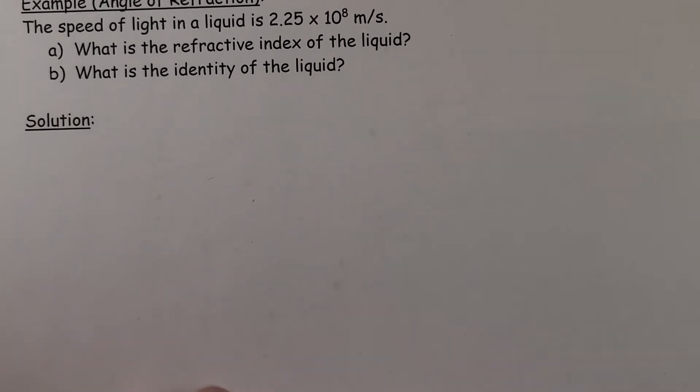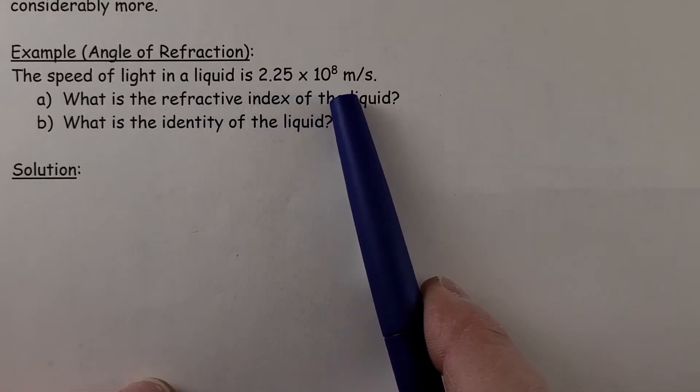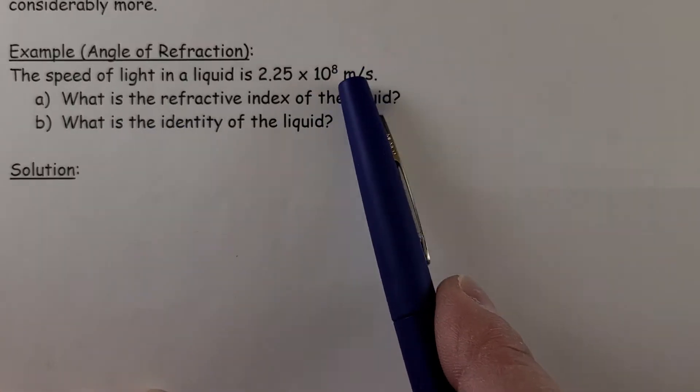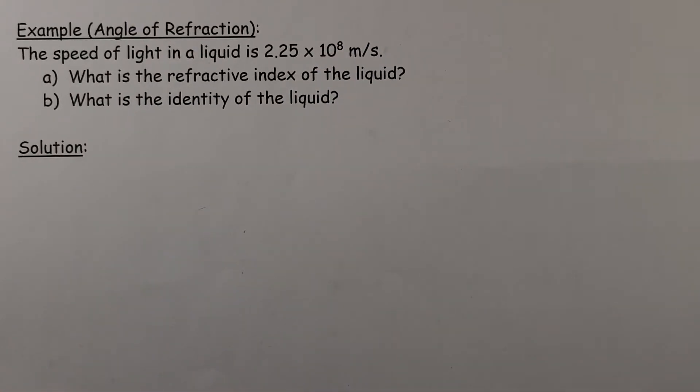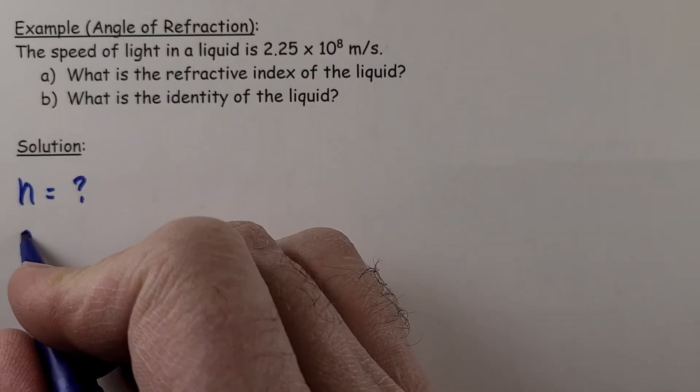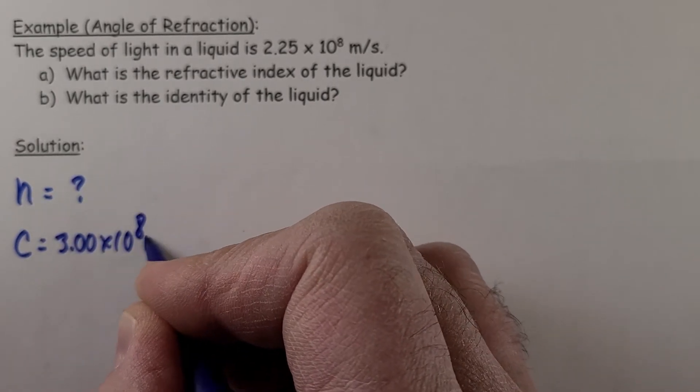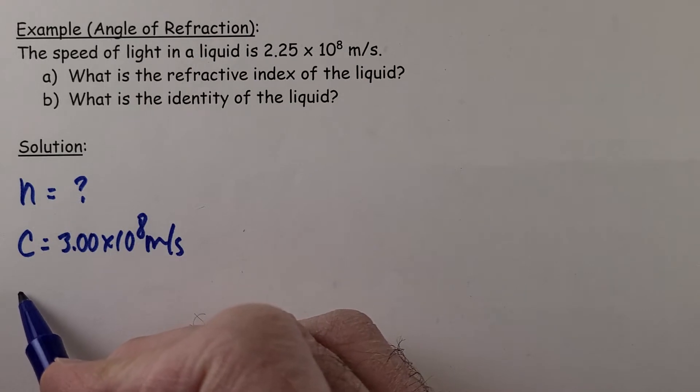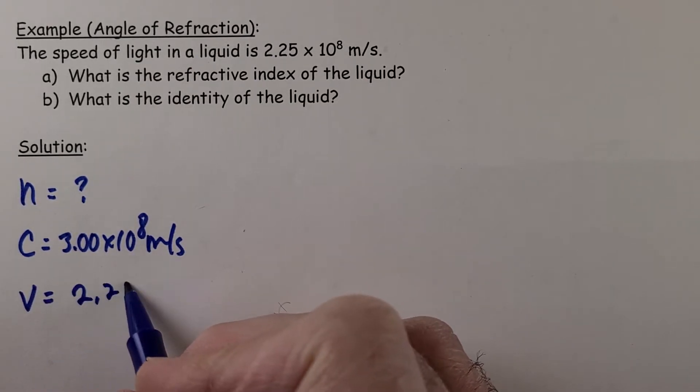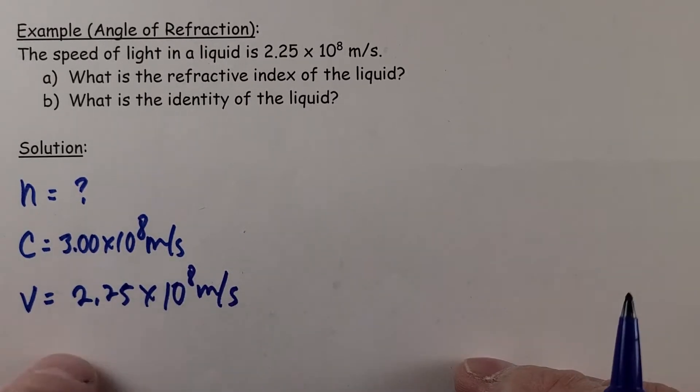Let's look at an example dealing with that. The speed of light in a mystery liquid is 2.25 times 10 to the 8 meters per second. What is the index of refraction of that liquid? And once I know that, I can figure out the identity of that liquid. We're looking for this index of refraction in this mysterious liquid. Speed of light in a vacuum or loosely speaking air is 3.00 times 10 to the 8 meters per second. And in this liquid, 2.25 times 10 to the 8 meters per second.